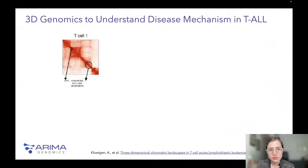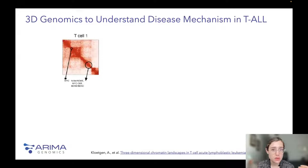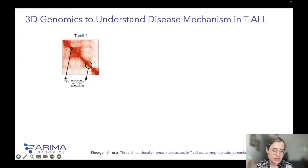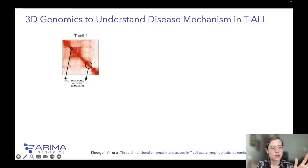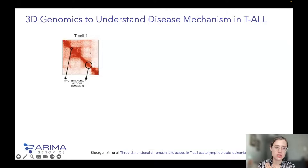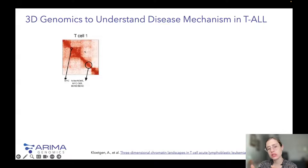There are many seminal papers demonstrating that changes in chromatin architecture — a change in a TAD, a loop, or an enhancer-promoter interaction — can lead to aberrant gene expression. Here's an example from a recent paper from the Ифantis lab at NYU. They studied T-cell acute lymphoblastic leukemia and used 3D genomics to understand its mechanisms. Here we have a normal T-cell Hi-C heatmap showing the structure of the genome around the oncogene MYC, with a super-enhancer element located a bit further down.